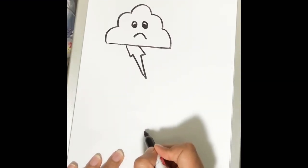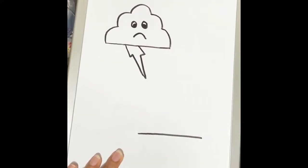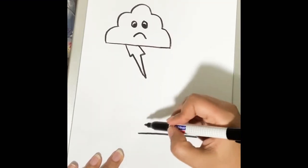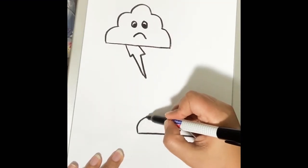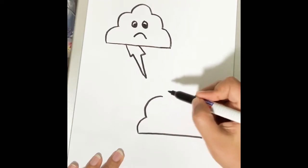So again, same way we'll draw a straight line, one sleeping line. Then curves. One curve like one C, two C.